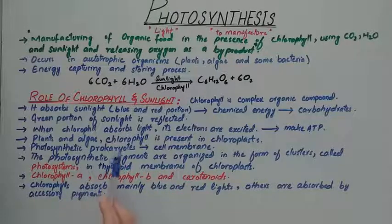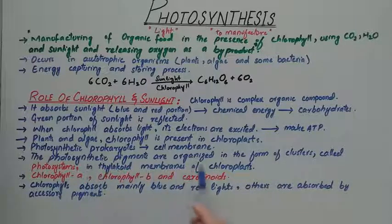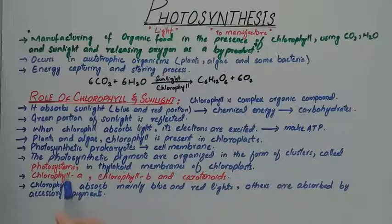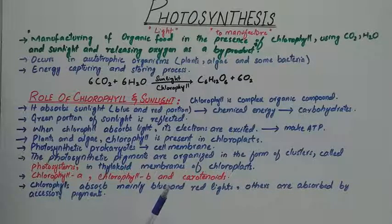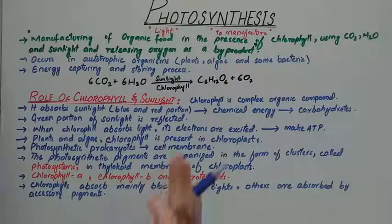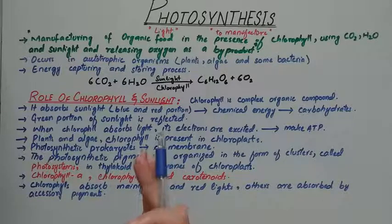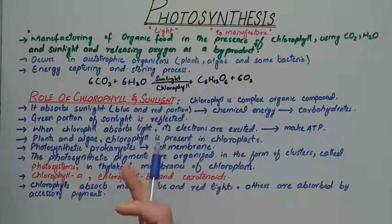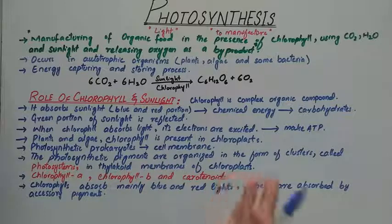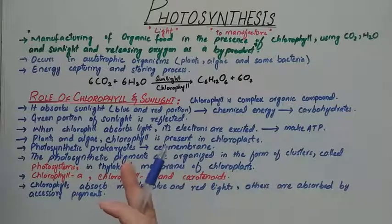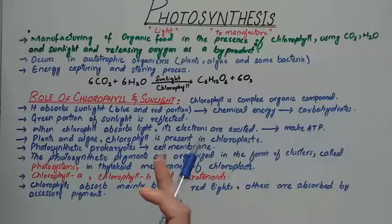The photosynthetic pigments are organized in the form of clusters called photosystems, present in the thylakoid membranes of the chloroplast. Because of these photosystems, the plant is able to make its own food — converting light energy into chemical energy, which is then utilized in the formation of glucose.